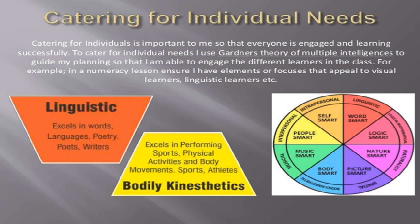To ensure everyone is engaged and learning successfully, and to cater for individual needs, Gardner's Theory of Multiple Intelligences can be used to guide planning so that we are better positioned to address different learners in the class. For example, in a numeracy lesson, ensure there are elements that appeal to visual learners. Different individual needs in the classroom should be kept in mind. We will discuss in our next lecture how Gardner's Theory can be used when we are using games in our classroom for learning purposes.